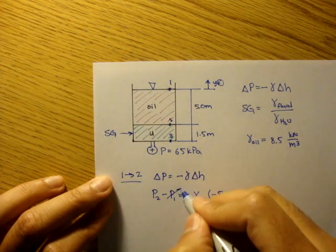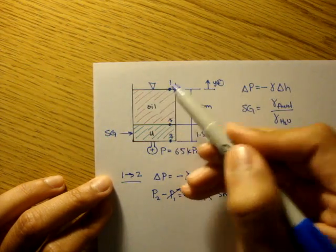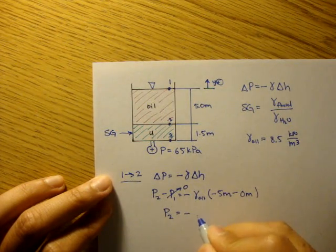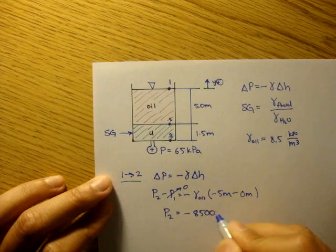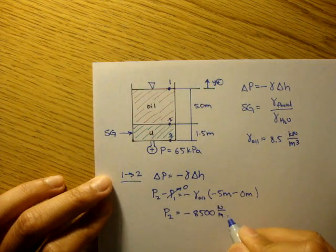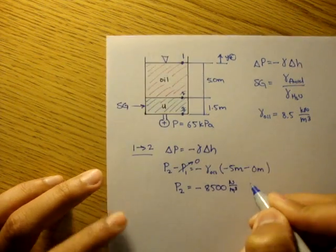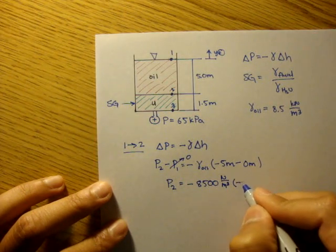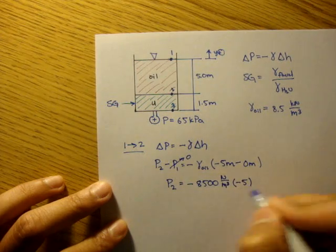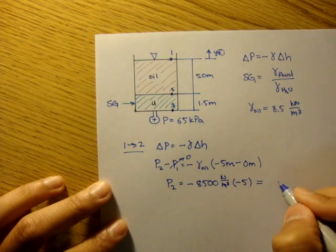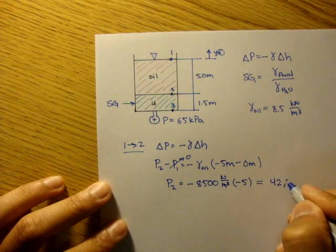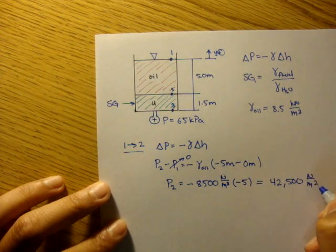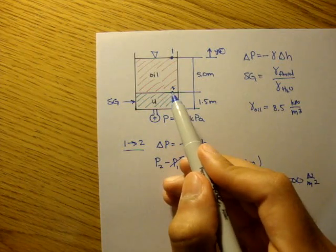So pressure at two equals negative 8500 newtons per meter cubed—I converted kilonewtons to newtons—times negative five. That gives us 42,500 newtons per meter squared. We found the pressure at point two.